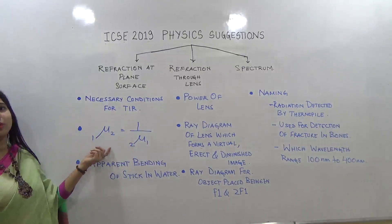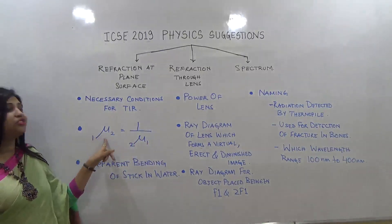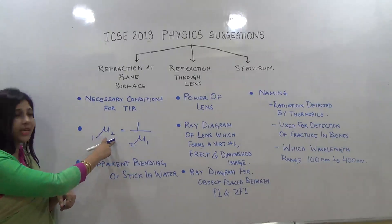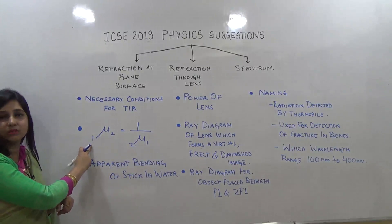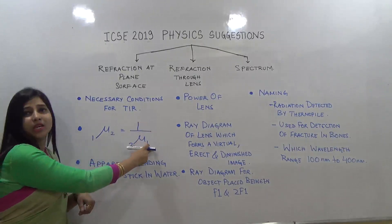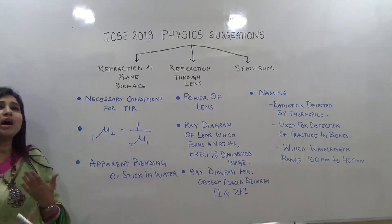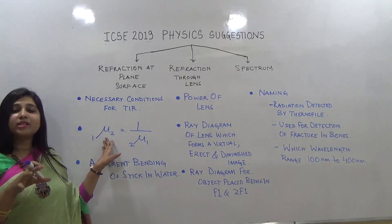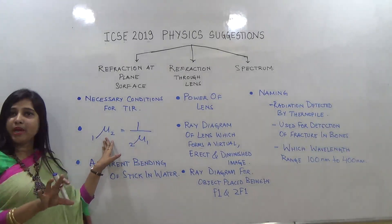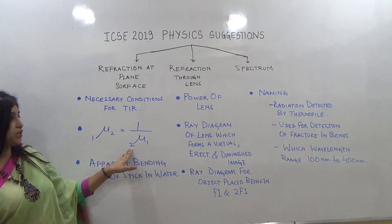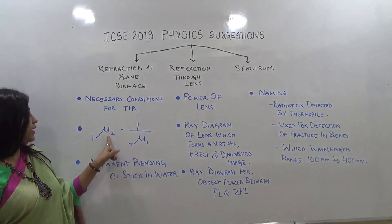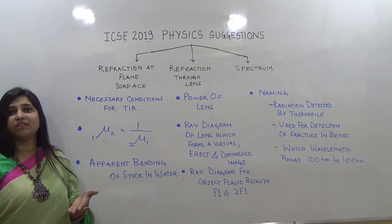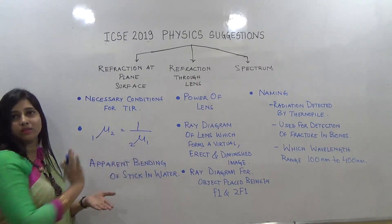Next is this important relationship: the refractive index of the second medium with respect to the first medium equals 1 divided by the refractive index of the first medium with respect to the second medium. For example, if the refractive index of glass with respect to air is given, they will ask for the refractive index of air with respect to glass — you simply take the reciprocal.